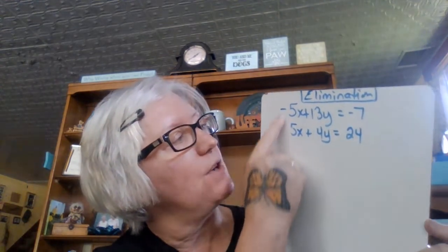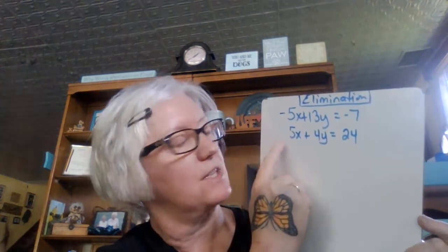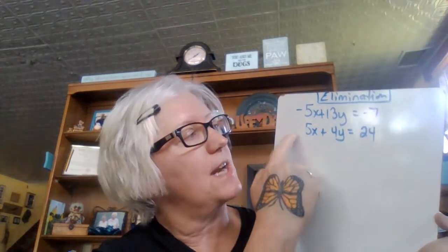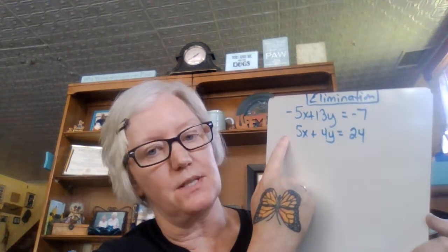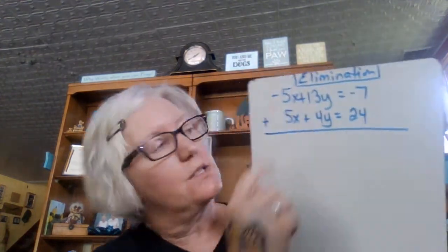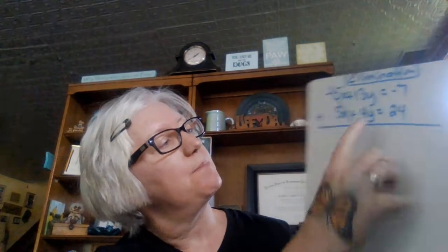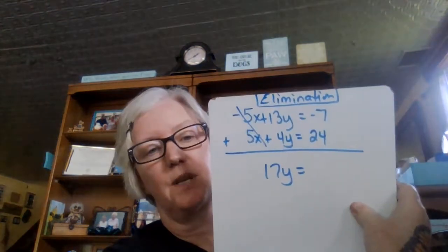The first example already has that condition met because there's a negative 5x and a positive 5x. If you have the same coefficient with opposite signs on either x or y, you simply add the equations together. Negative 5x plus 5x cancels out — that's why it's called elimination. 13y plus 4y is 17y, and negative 7 plus 24 is 17. Divide by 17 and you get y equals 1.